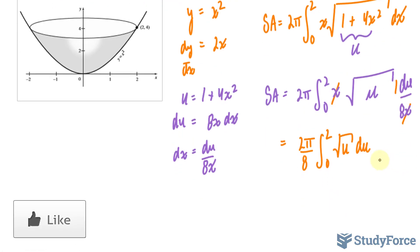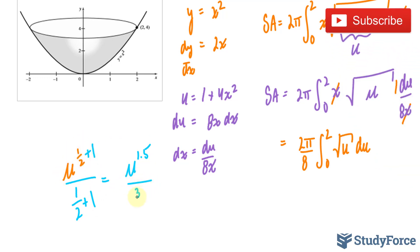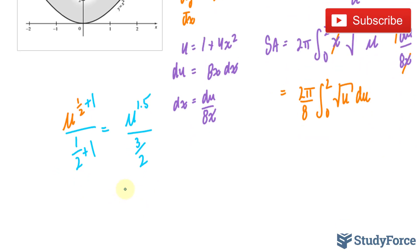Finding the integral of the square root of u isn't hard. First, I'll change this expression, the square root of u, into u to the power of half. Add 1 to the exponent and divide the term by 1 over 2 plus 1, which gives us u to the power of 1.5, which is equivalent to 3 over 2, adding these two up, over 3 over 2, giving us a final expression like this.